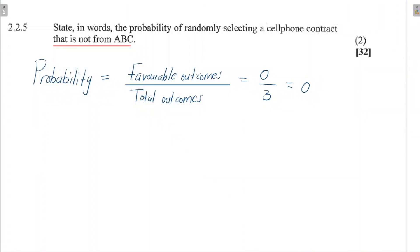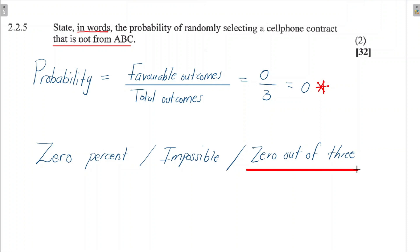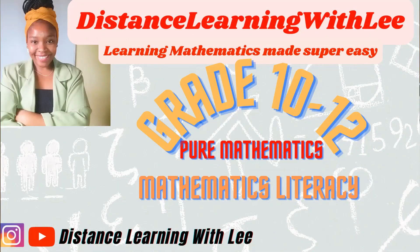The probability of randomly selecting a cell phone contract that is not from the ABC plan is zero out of three, which equals zero. In words, this means it is impossible — or 'not possible' — to select a non-ABC contract from this invoice. You can state the answer as zero out of three, zero percent, or simply 'impossible.' That's it for Question 2.2. See you on the next upload — Distance Learning with Lee, where I make learning mathematics easy.